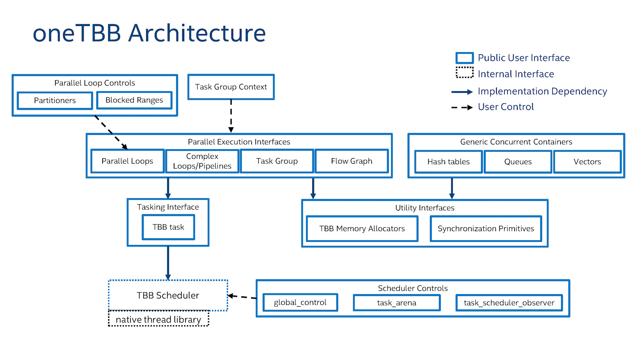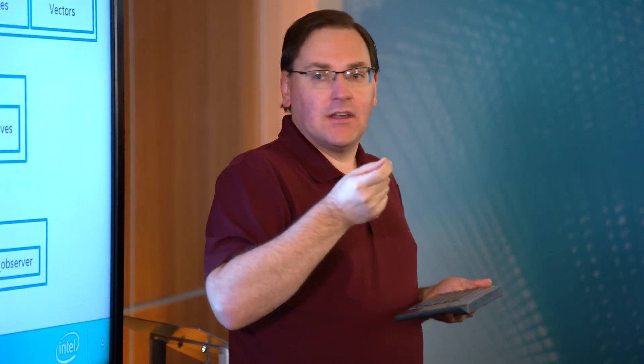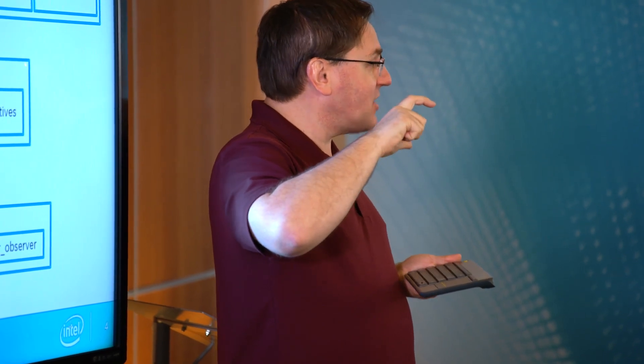There are also concurrent containers like hash tables, queues, and vectors that are not only thread safe but thread friendly. With a standard queue, you have to do multiple operations atomically: check if the queue is empty, get the head, then pop it. In TBB, we have a queue with a pop-if-present function, so you get all three operations in one atomic call. In TBB, it's all just one call and you get the behavior you want.